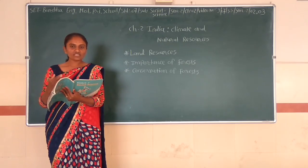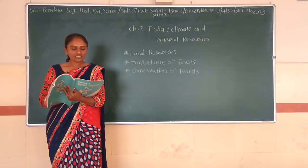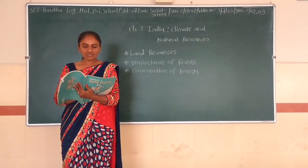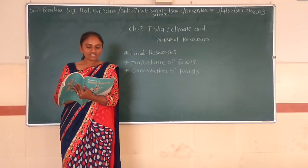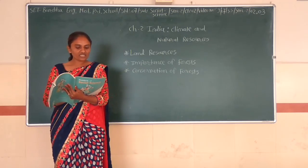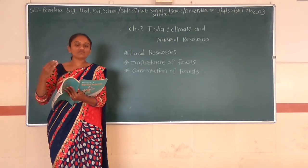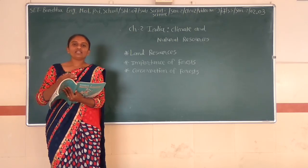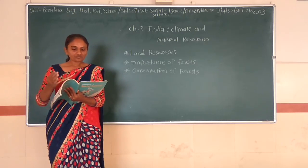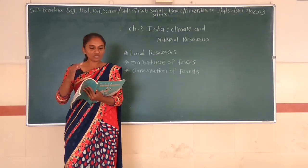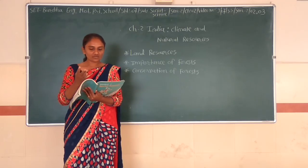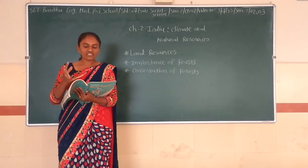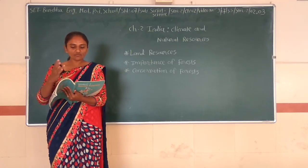Evergreen forests are found in the northeastern parts, mountainous regions, and the Andaman and Nicobar Islands of India. They are called evergreen as there is no particular season for the trees to shed their leaves. Therefore, these trees are usually 30 to 35 meters in height.